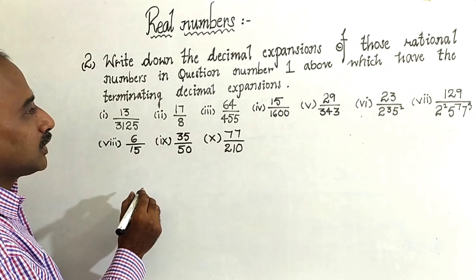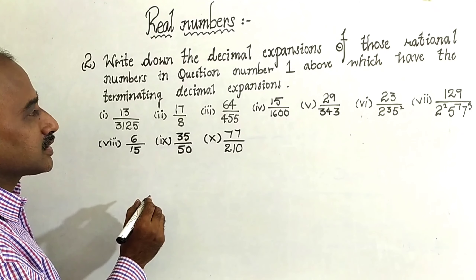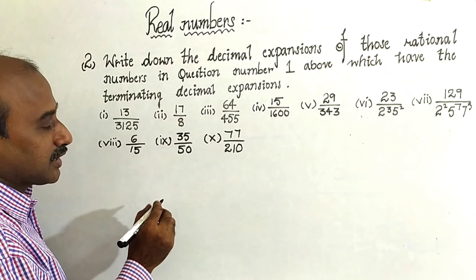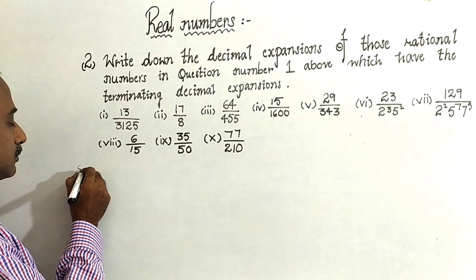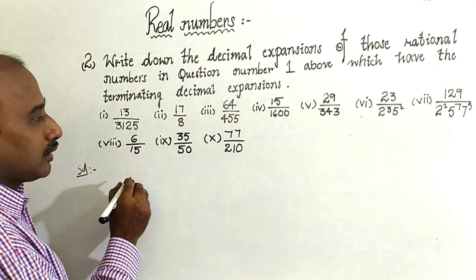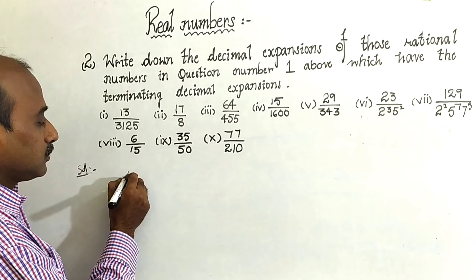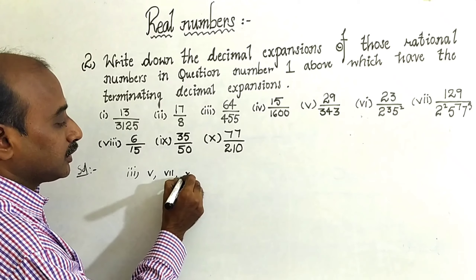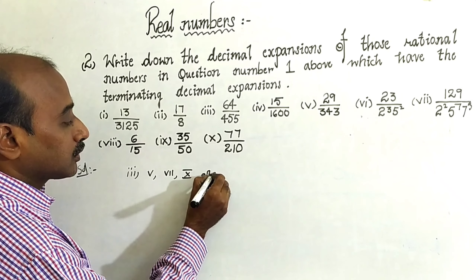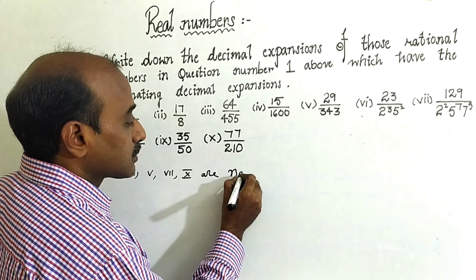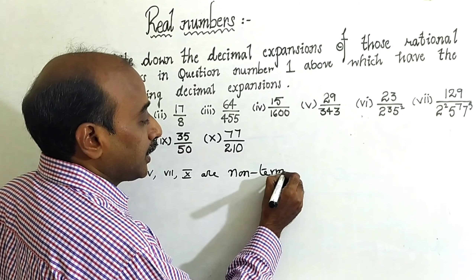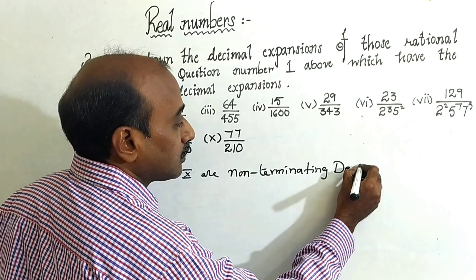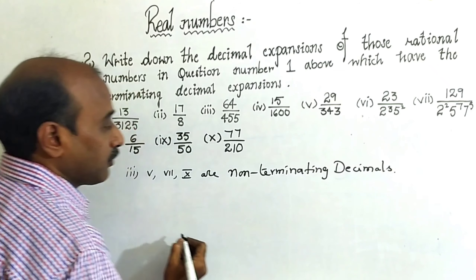Question number two: write down the decimal expansion of those rational numbers in question number one which have the terminating decimal expansion. Coming to the solution, we already know that the third one, fifth one, seventh one, and tenth one are non-terminating decimals, as we proved in question number one.